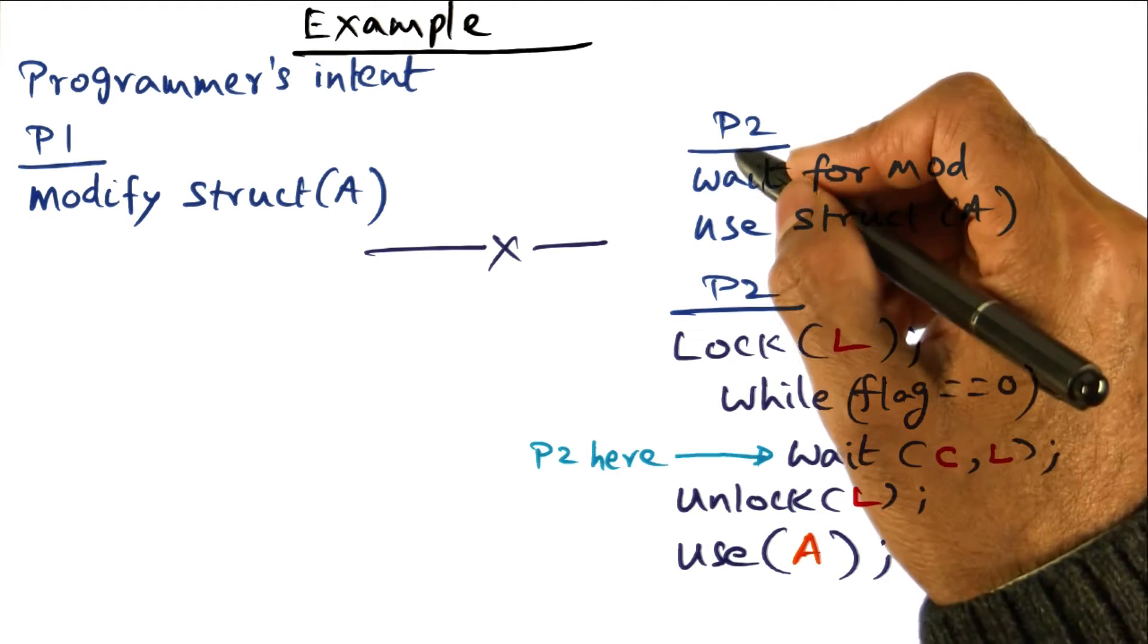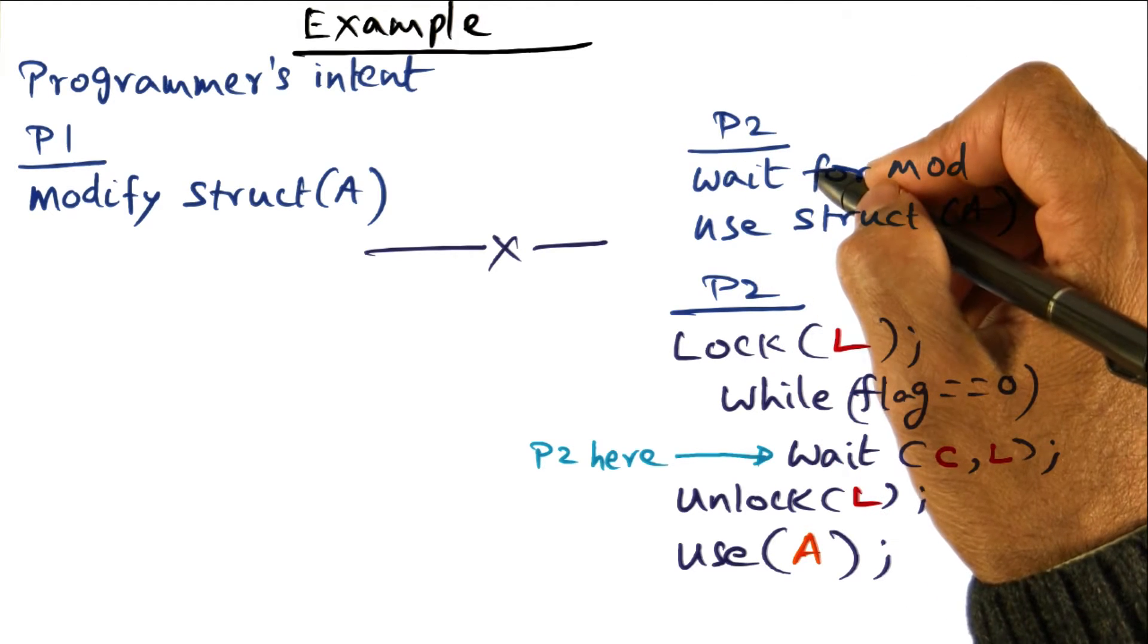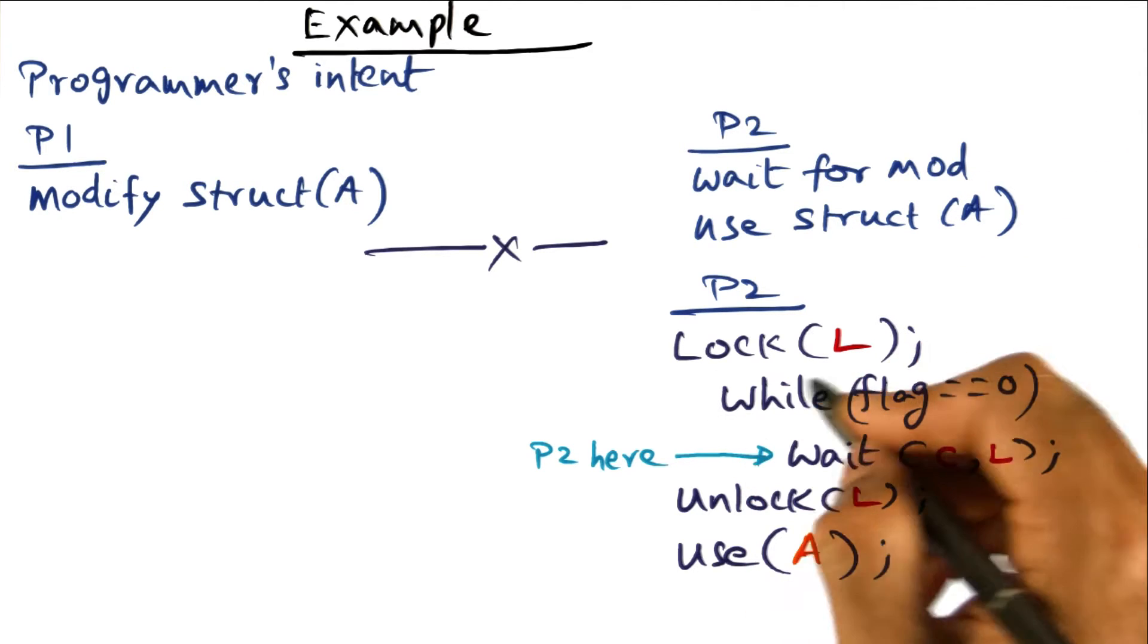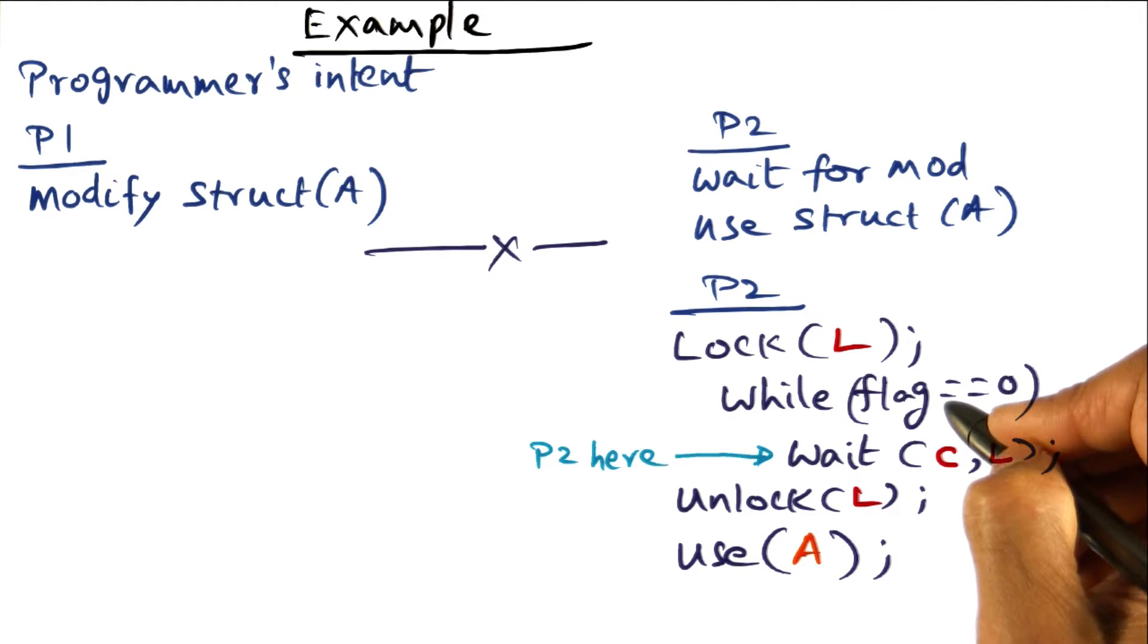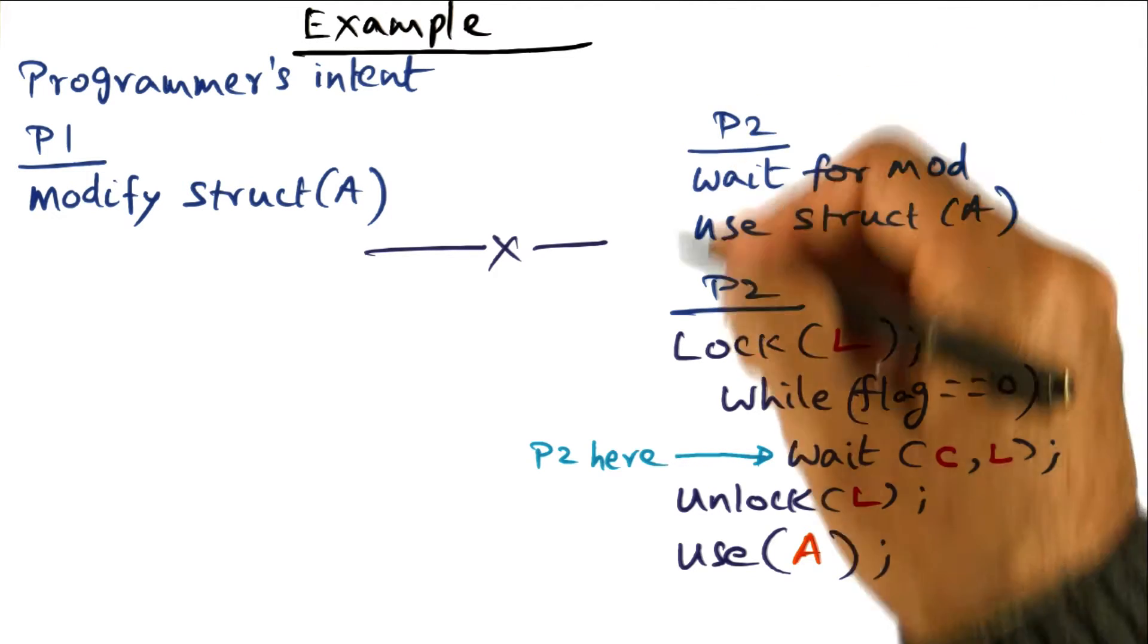Let's say that P2 executes the code that corresponds to this semantic. It wants to wait for the modification. So in order to do that, it has a flag. This flag has a semantic that is zero indicating the modification is not done, and one when the modification is actually done.